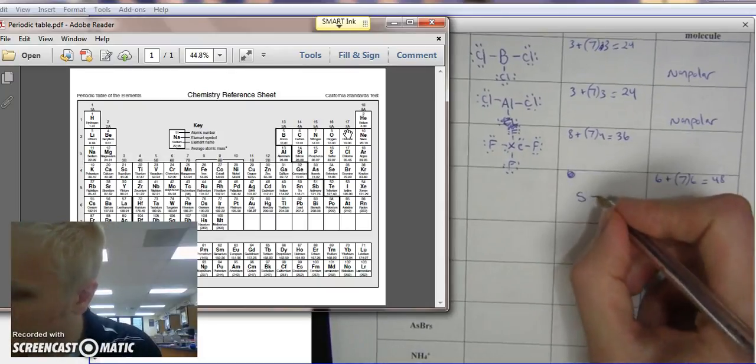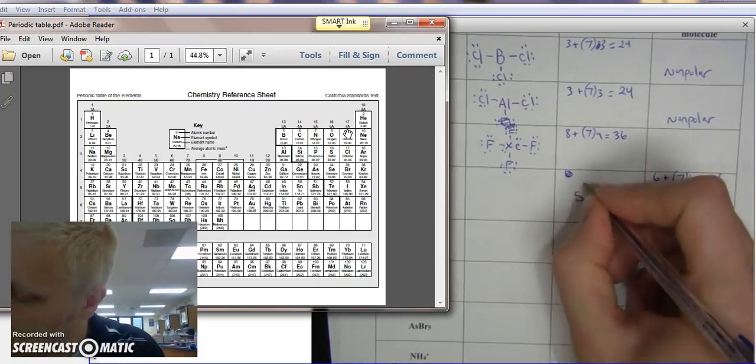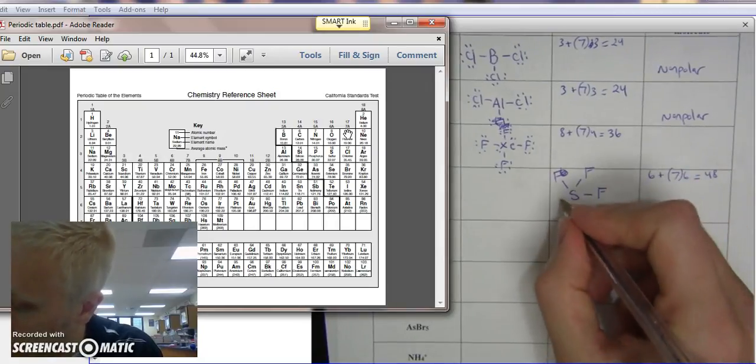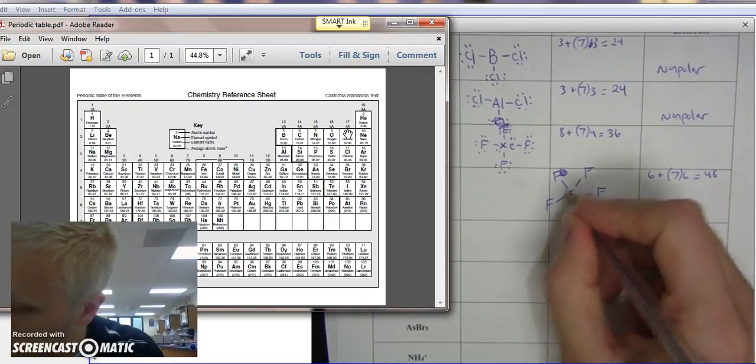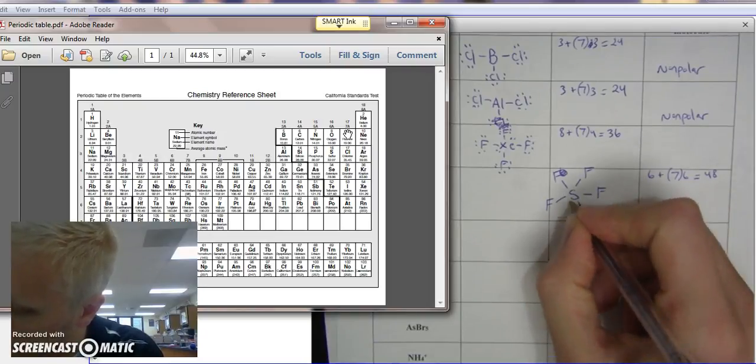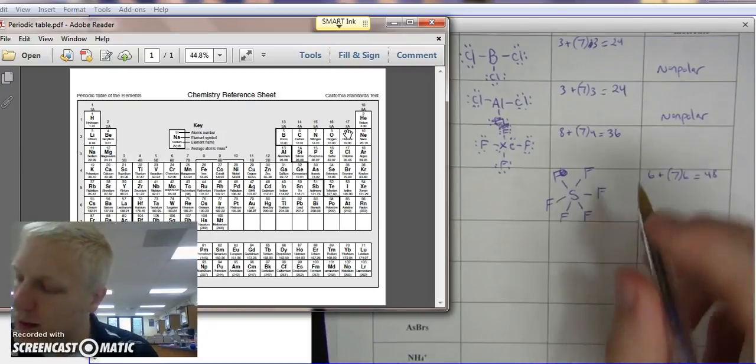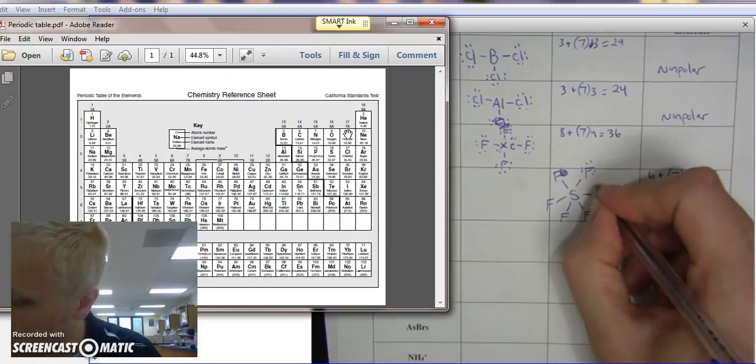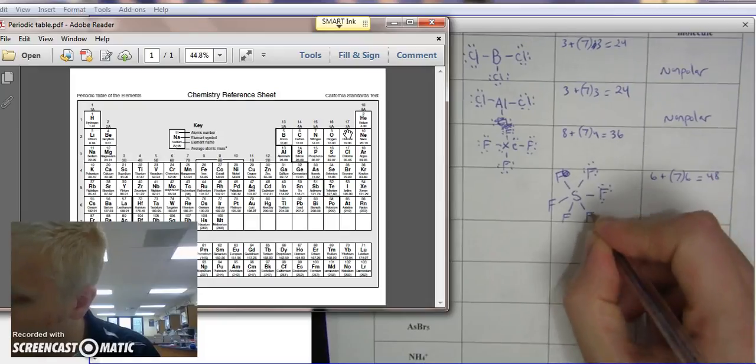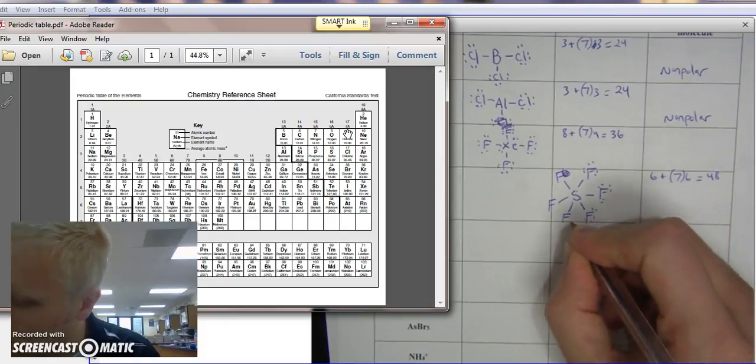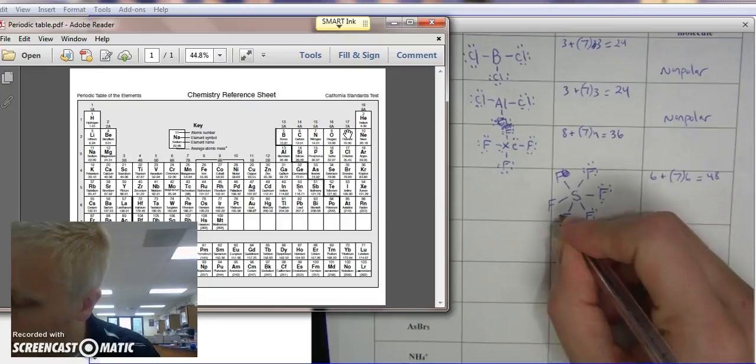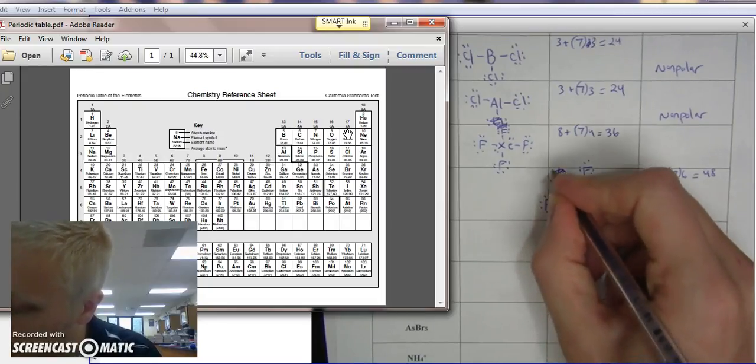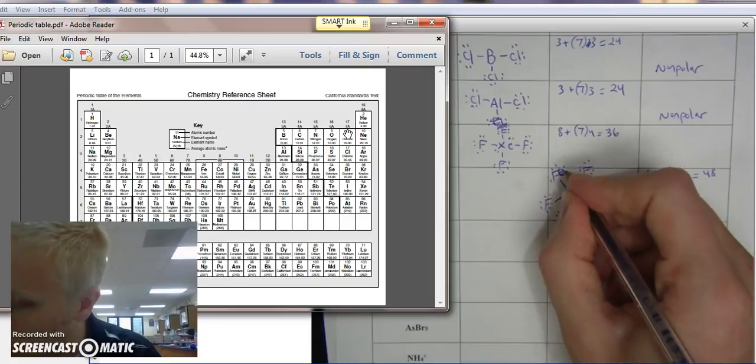All right. So we're going to connect each of these 6 fluorines to this sulfur. And that gives us [counting from 2 to 48].